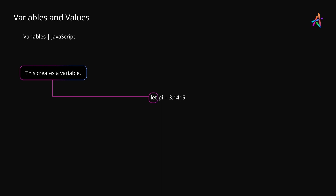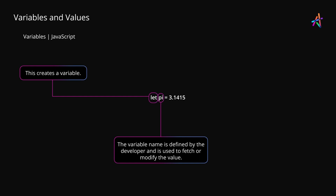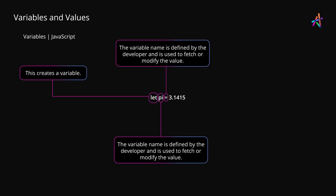The word 'let' is a reserved keyword, part of JavaScript's grammar — this creates a variable. Next we have the name of the variable as 'pi'. This is something that is up to us to decide, but there are some rules and best practices which we'll discuss in a bit. Next up we have the equal-to sign, which is known as an assignment operator — it takes the value on the right-hand side of the sign and puts it in the variable on the left-hand side.